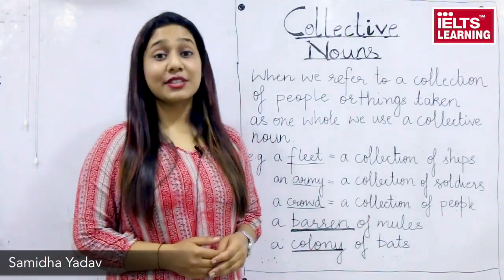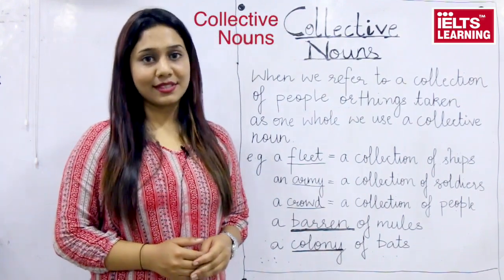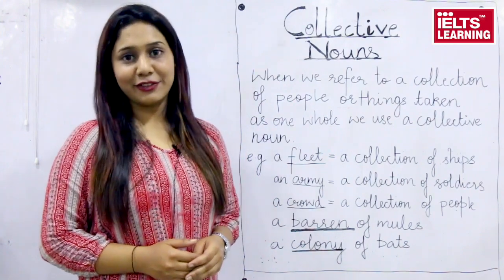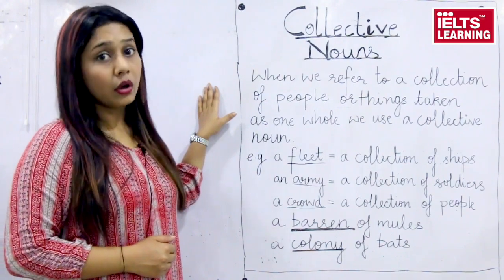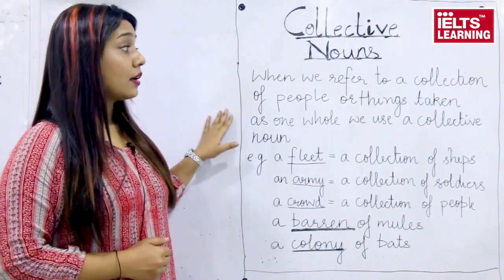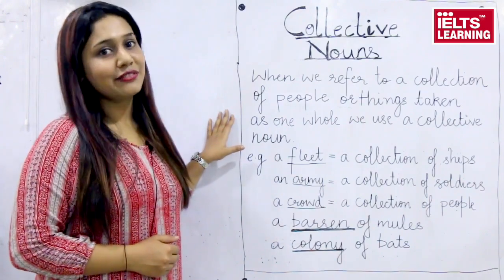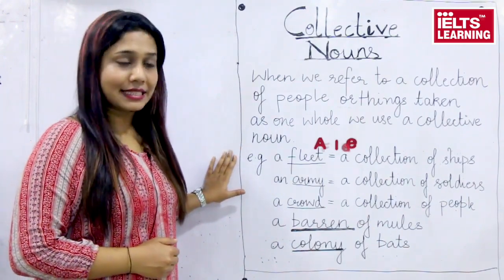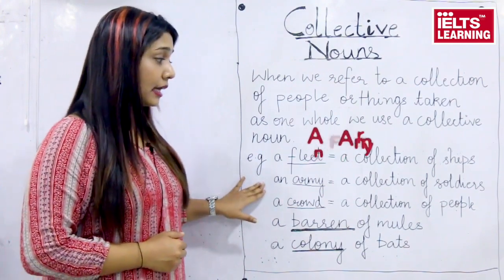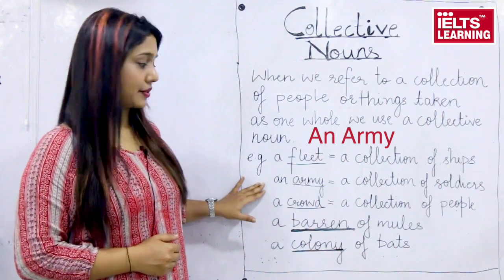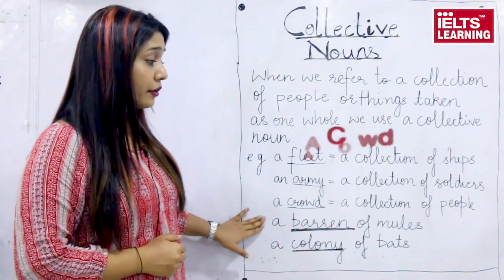Hello friends, today we will be learning about collective nouns. When we refer to a collection of people or things taken as a whole, we use a collective noun. For instance, a fleet is a collection of ships, an army is a collection of soldiers, a crowd is a collection of people.